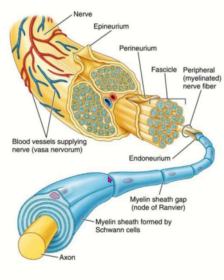Sodium channels are more numerous than potassium channels, and the number of sodium channels is 1 to 2 thousand per square micrometer. Due to the presence of the node of Ranvier, nerve conduction jumps from one node to another, known as saltatory conduction. This myelination is externally covered by another connective tissue membrane known as the endoneurium.